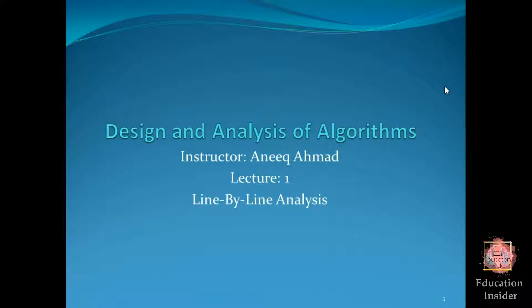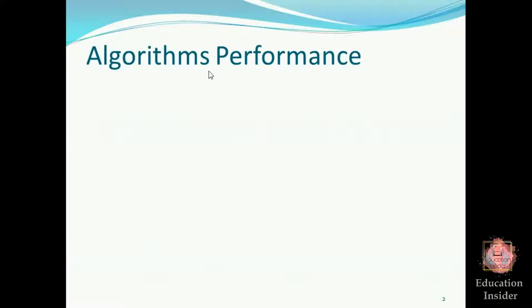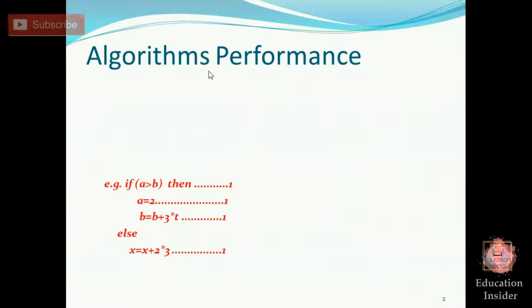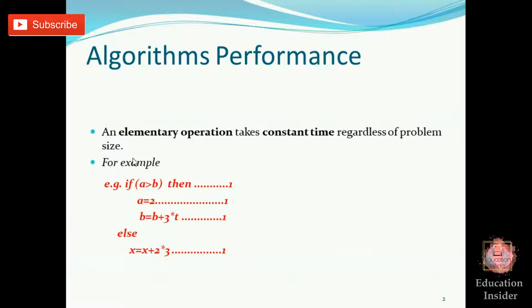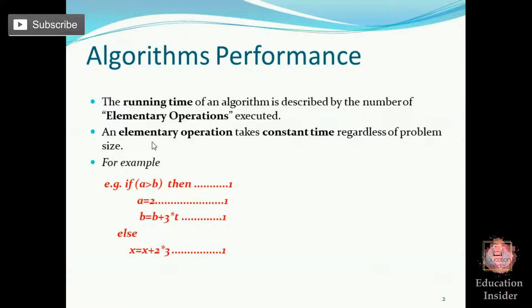Let's start with line-by-line analysis and algorithm performance. What is an algorithm? An algorithm is simply the steps of operations. We will name each operation an elementary operation. An elementary operation is one that takes constant time — constant simply means it runs in one time unit. Running time is described as the number of elementary operations executed.